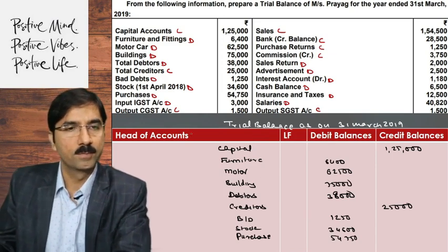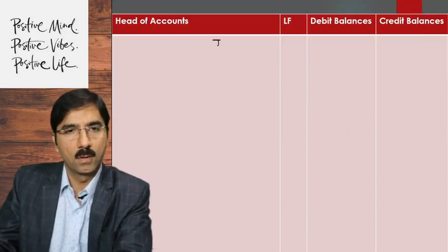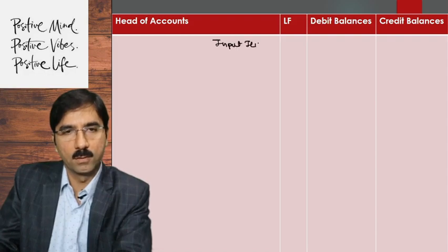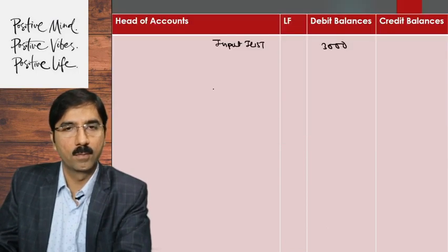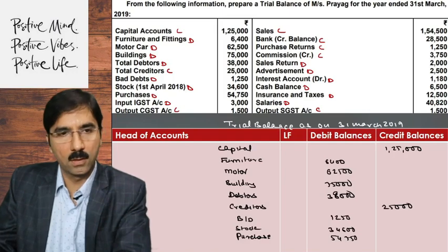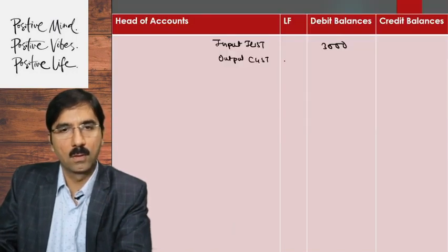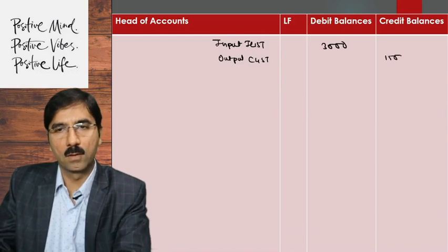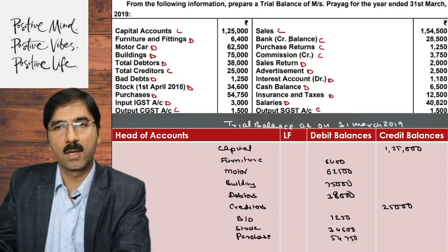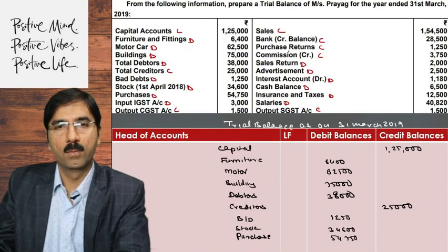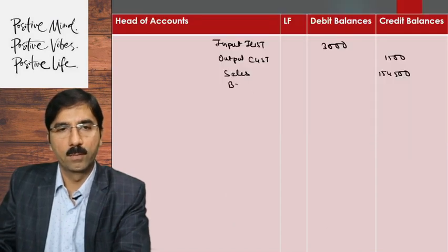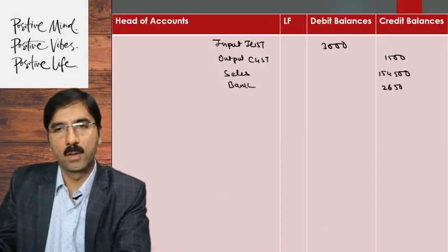Okay, baakye aage dekhte hain. Input IGST 3,000 debit. Output SGST 1,500 credit. Output CGST 1,500 credit. Sales 1,54,500 credit. Bank 28,500 credit balance — bank loan liya hua hai.